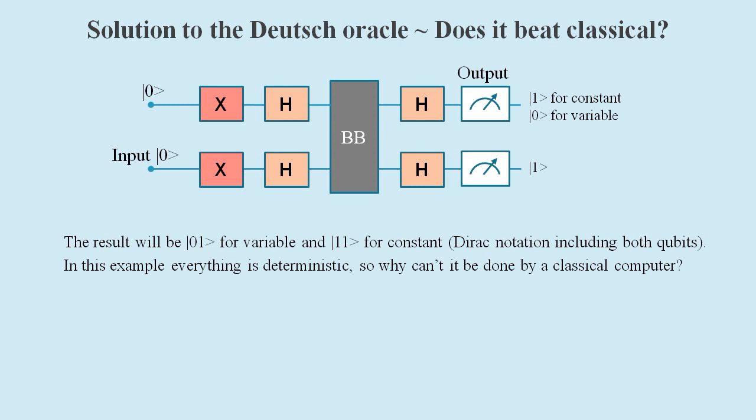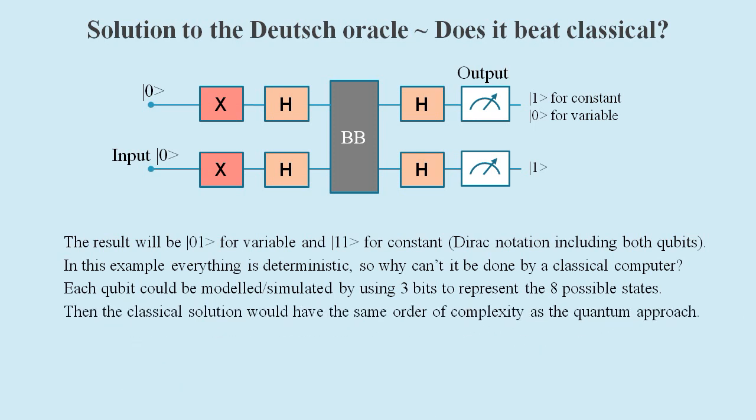But in this example everything is 100% deterministic, and so there is no reason why we can't model or simulate this with classical computing using three bits to represent the eight possible qubit states. Then the classical solution would have the same order of complexity as the quantum approach, making it equally as good.